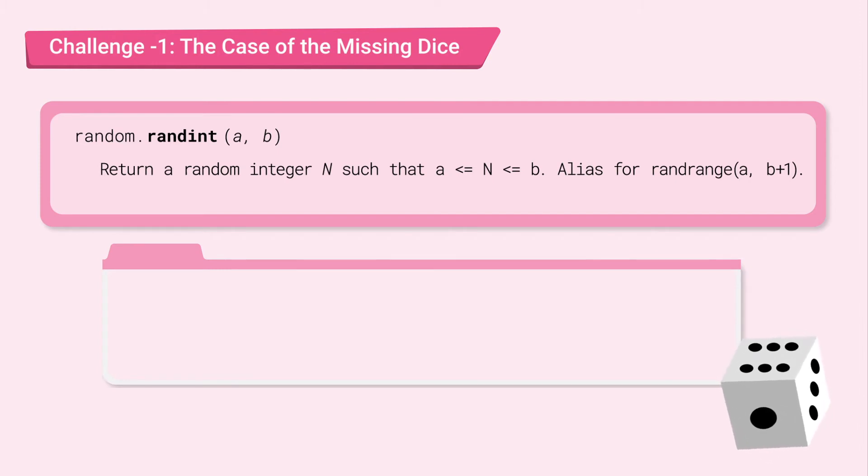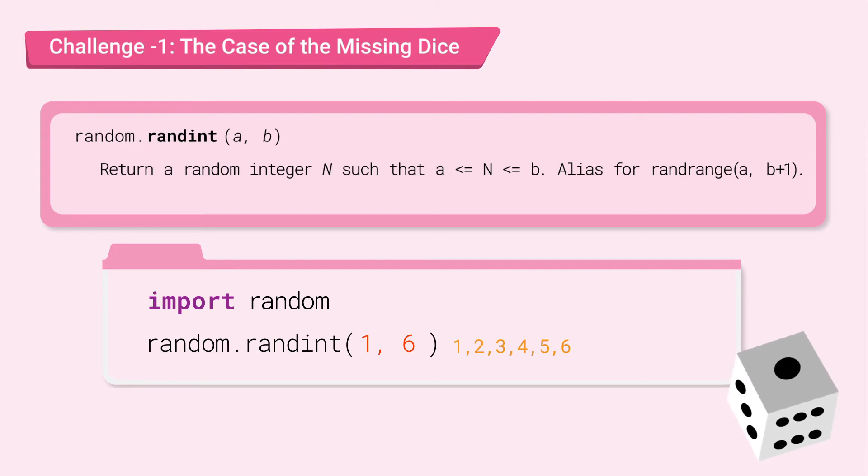Now let's use randint to create the virtual dice program. To use the random module, simply import it. Make sure to insert the import line at the top of your code. Next, use randint function and set the range. Since we need the range to be from 1 to 6, pass 1 comma 6. This will produce a random number in the range 1 to 6.